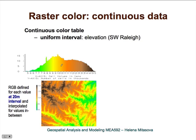The floating point continuous representation can be based on uniform intervals. For example, in this map, the RGB is defined for each value at 20-meter elevation intervals. This works pretty well and we can see very nicely the structure of topography. The histogram is fairly uniformly distributed — we have about the same number of grid cells for each elevation.